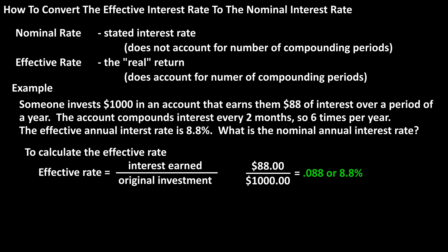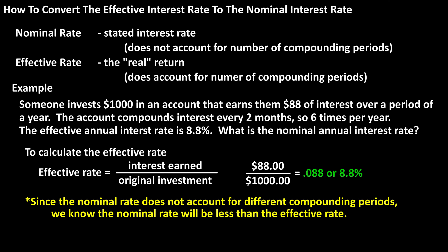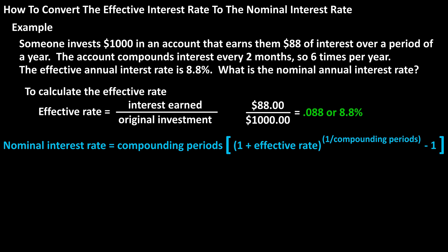So what is the nominal annual interest rate? Since the nominal annual interest rate does not take into account different compounding periods, we know that the nominal rate will be less than the effective rate of interest. The formula to convert the effective rate of interest to the nominal rate is: nominal rate equals the number of compounding periods times the quantity (1 plus the effective rate) raised to the power of 1 divided by the number of compounding periods, minus 1.